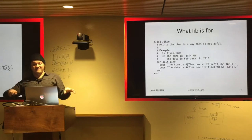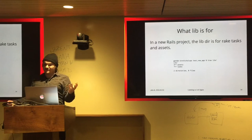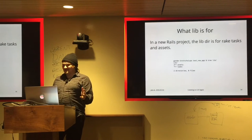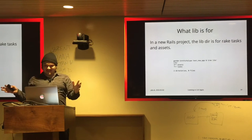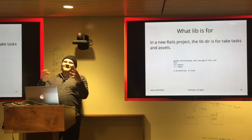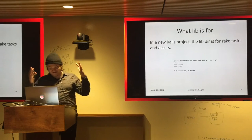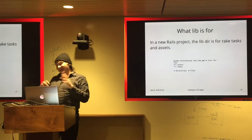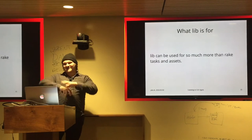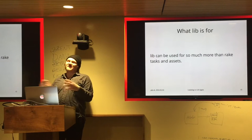I just want to show how simple lib can be — it can just be a class with one single class method. When you create a new Rails project with Rails new, the lib directory has two directories in it with nothing in them: the assets directory, which I don't think I've ever seen anyone use, and the tasks directory, which is for rake tasks. But I think the lib directory can use so much more than those two things.